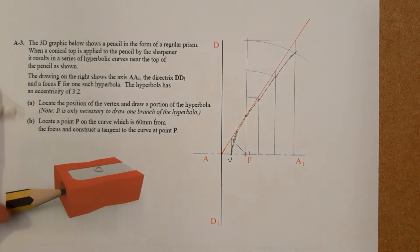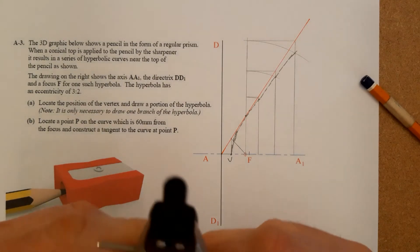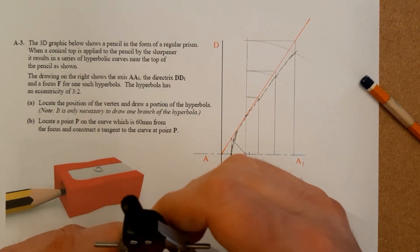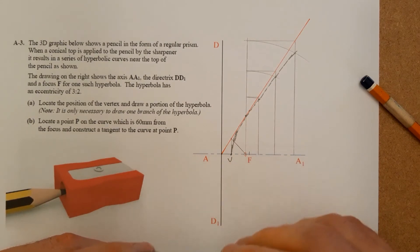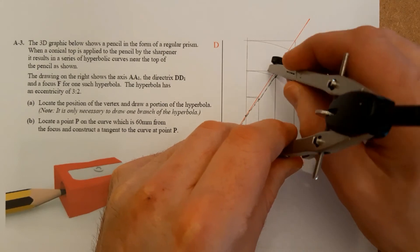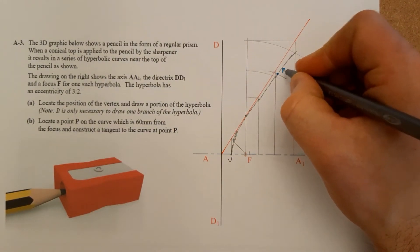So that'll do part A. Part B then: locate a point P on the curve which is 60 mil from the focus and construct a tangent to the curve at point P. So you must find point P first. Set your compass there to 60 mil, put it on F, swing an arc. That'll get me point P up there.